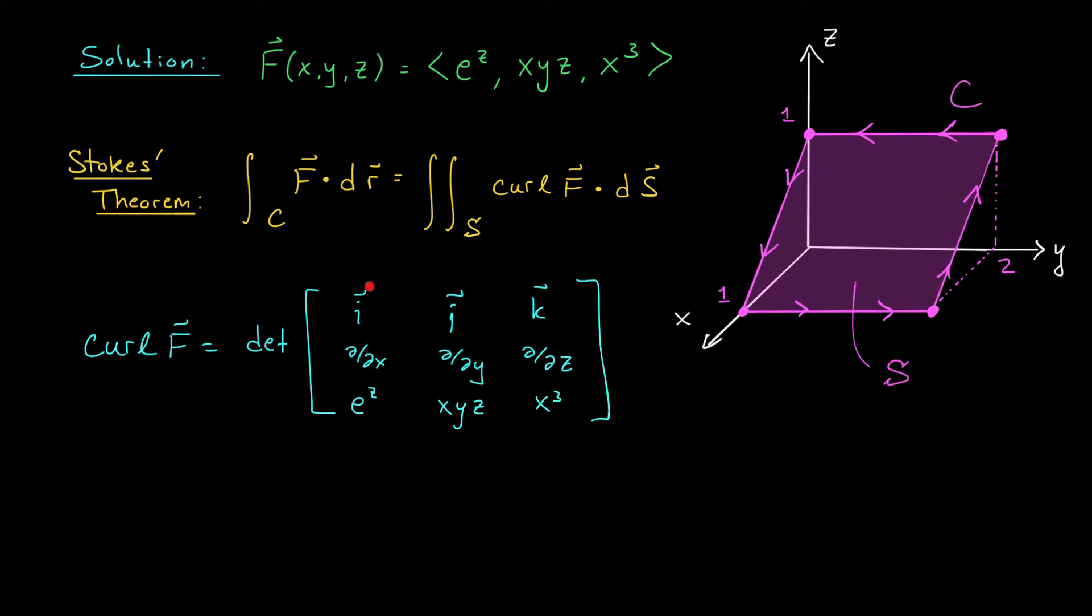If I look in the i component, it looks like I'm going to be doing partial by partial y of x³ minus partial by partial z of xyz. That will be -xy. We then subtract j times partial by partial x of x³ minus partial by partial z of e^z, and that gives us e^z - 3x².